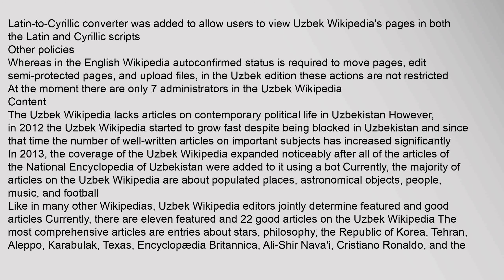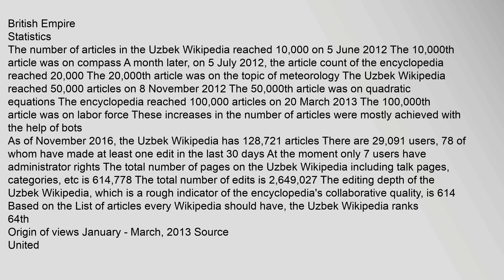The most comprehensive articles are entries about stars, philosophy, the Republic of Korea, Tehran, Aleppo, Karabulik, Texas, Encyclopedia Britannica, Ali Shir Navai, Cristiano Ronaldo, and the British Empire. The number of articles in the Uzbek Wikipedia reached 10,000 on 5 June 2012; the 10,000th article was on the compass.